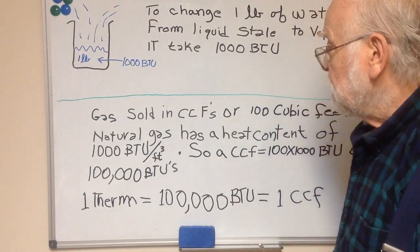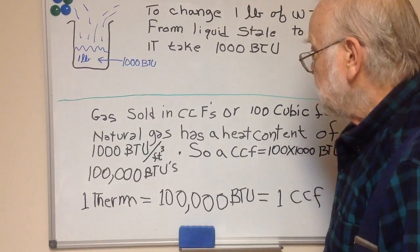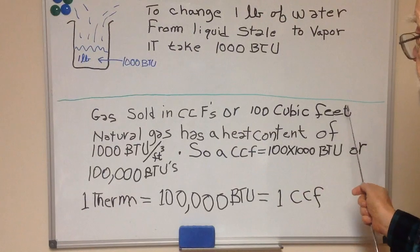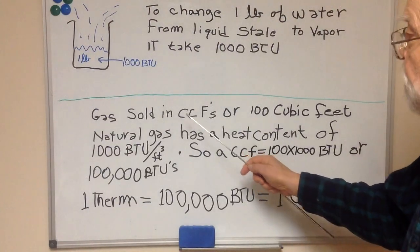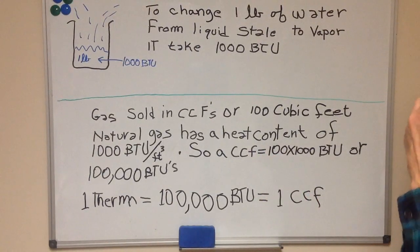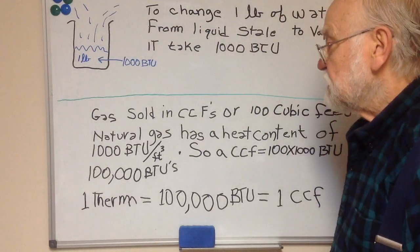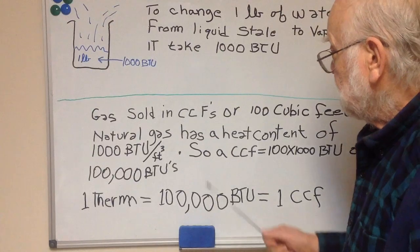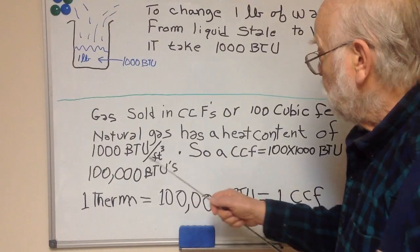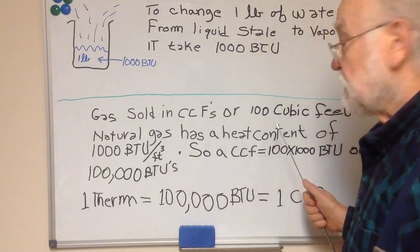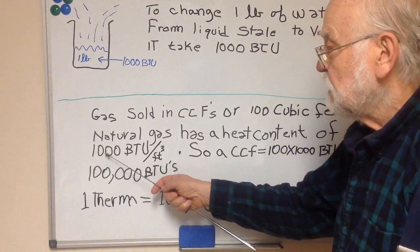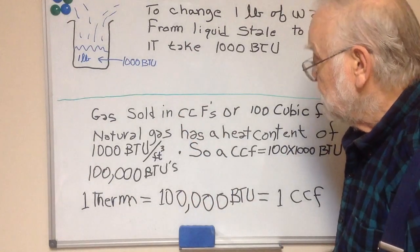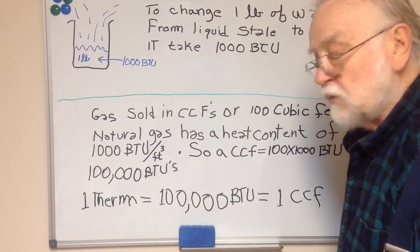When talking about selling natural gas, it's sold in hundreds of cubic feet — CCF, where the first C stands for a hundred and CF stands for cubic feet. Natural gas at the pressure supplied to most homes has a heat content of 1,000 BTUs per cubic foot — completely different from the 1,000 BTUs for converting liquid water into vapor.